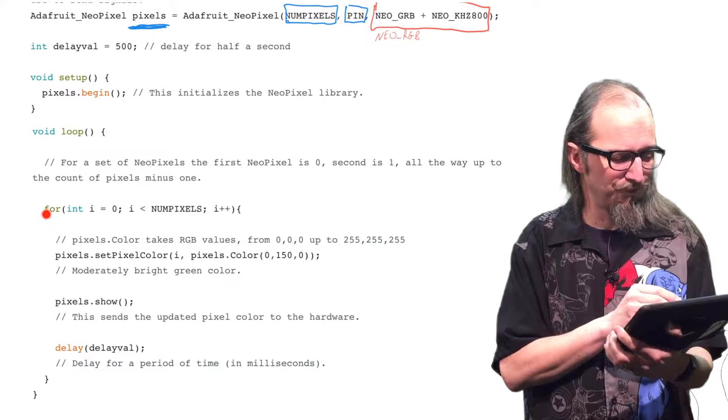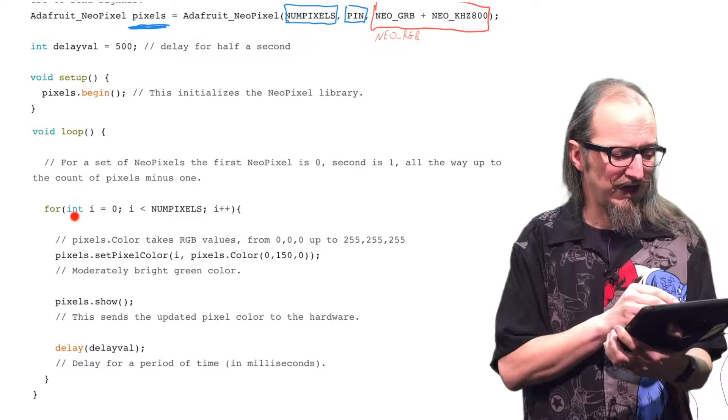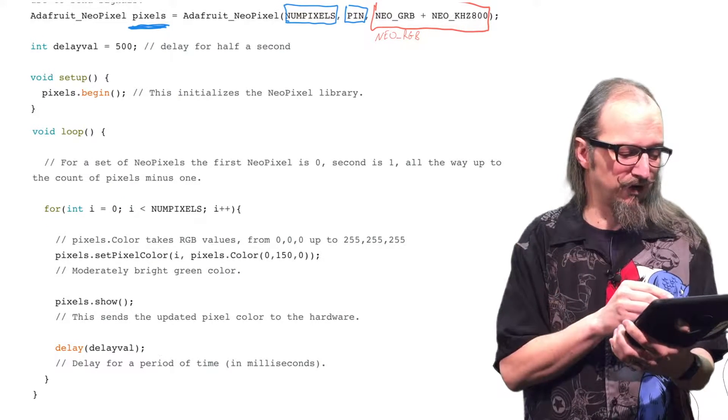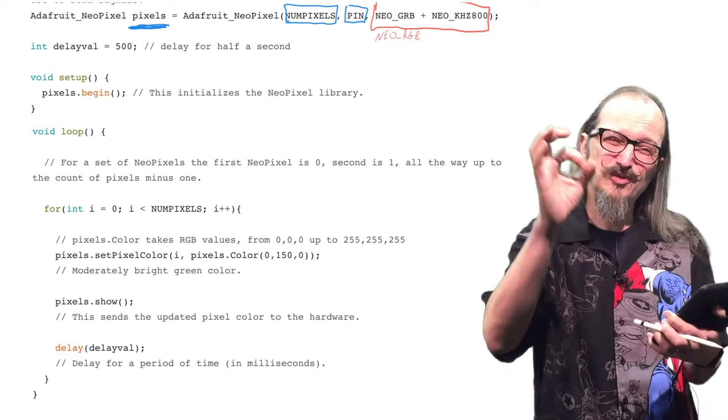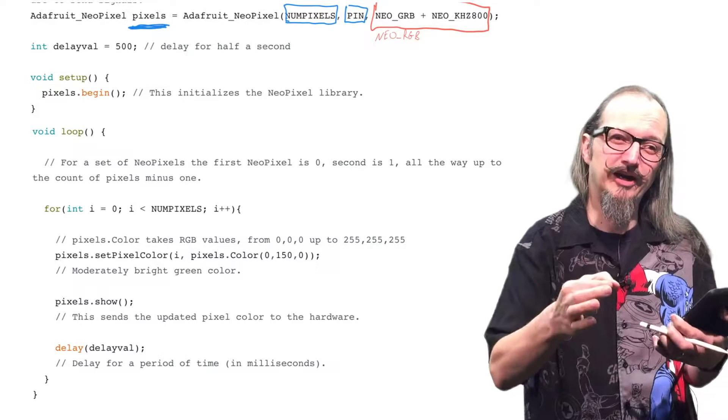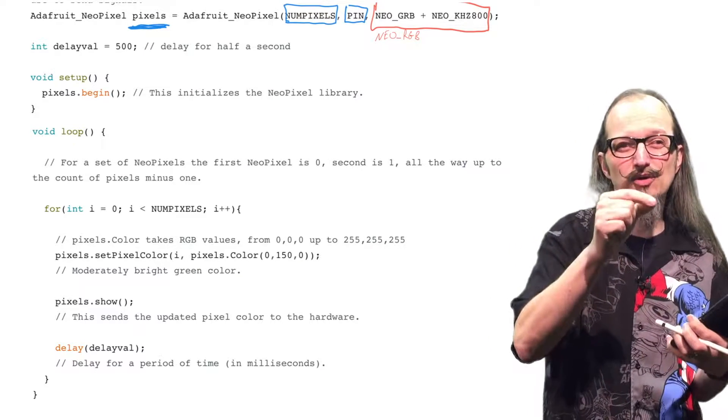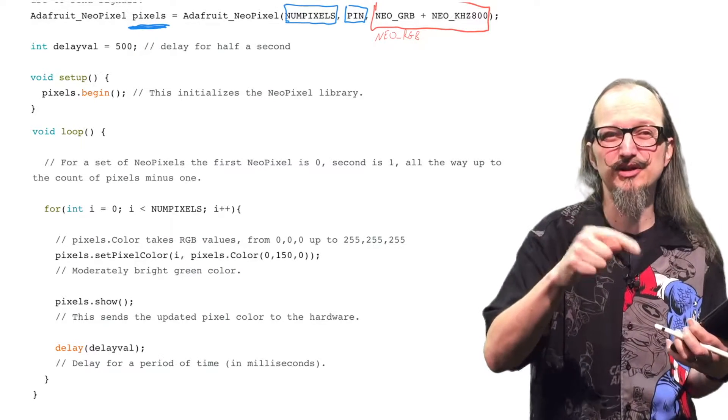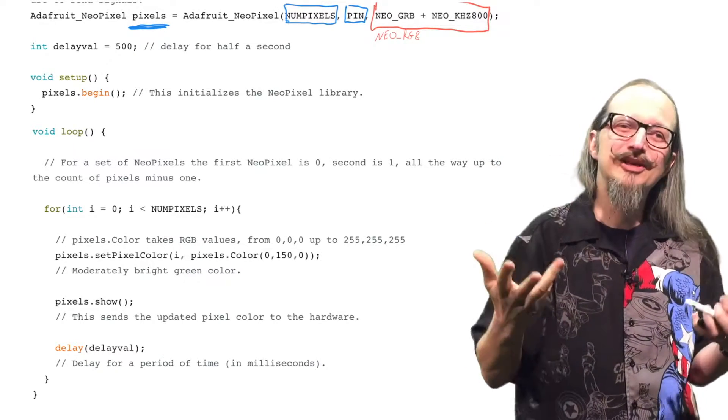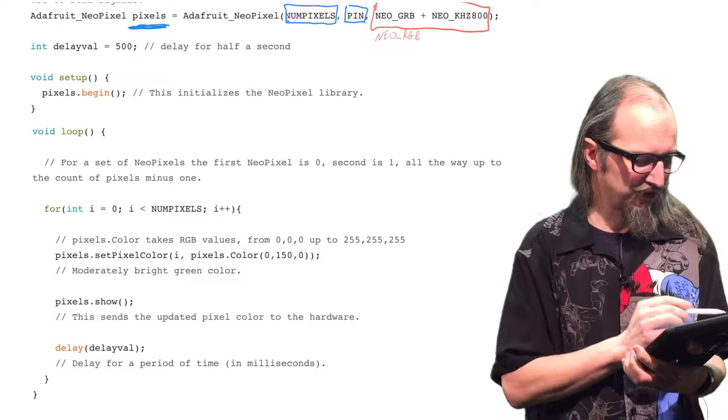Then down here, we've got a for loop. And we're going to go for i equals zero, because we're going to start at zero, and we're going to go through numPixels. Now, our pixels, we have 12 NeoPixels on our ring, and they are numbered from zero through 11. So, there are 12 pixels, zero through 11. So, the first one is zero, not one. Pretty typical in computer programming to start with zero.